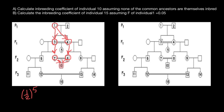But we have here another loop. Individual two can also pass its genes through another pathway. We will have another loop here, and again, how many nodes do we have? One, two, three, four, and five. So again we add one-half to the power of five.